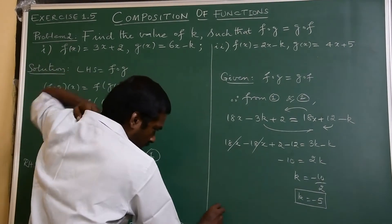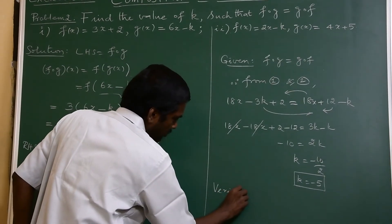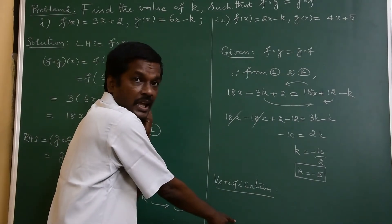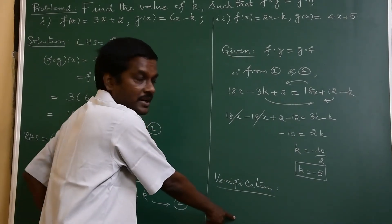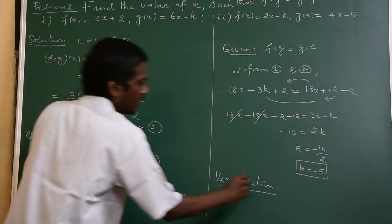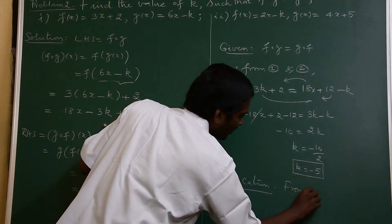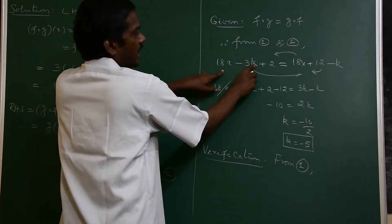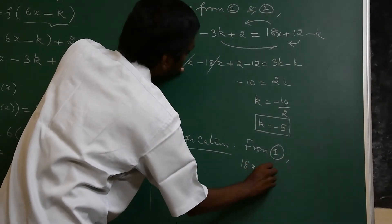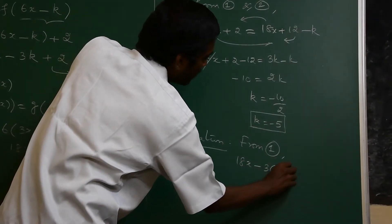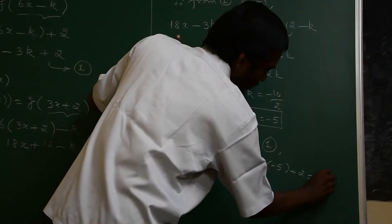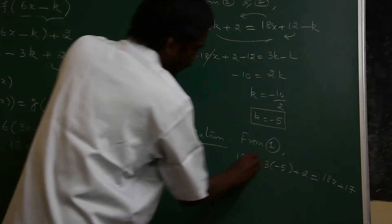We can verify this. In verification, substituting k equal to minus 5 into f composite g: 18x minus 3 times minus 5 plus 2, which is 18x plus 15 plus 2, giving 18x plus 17.